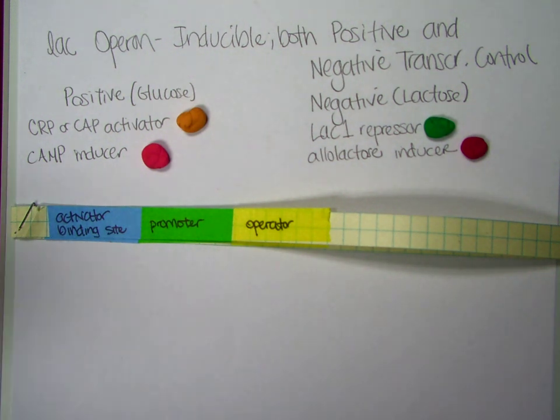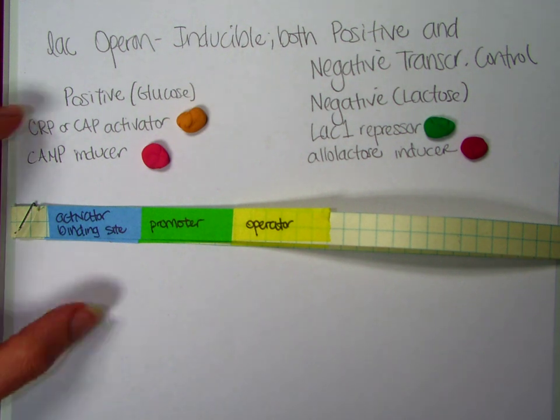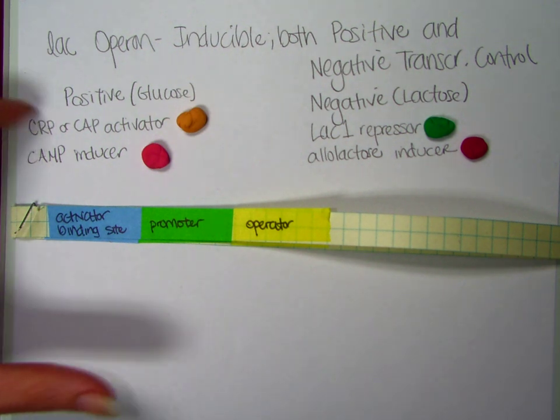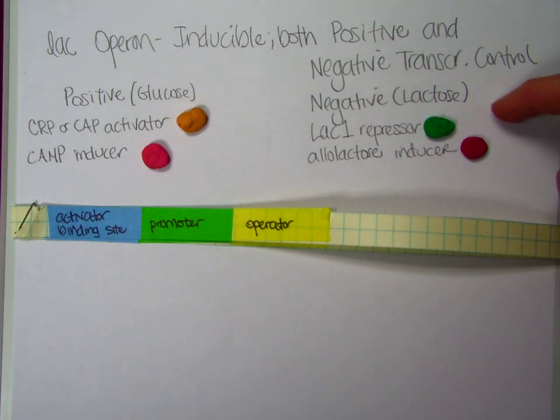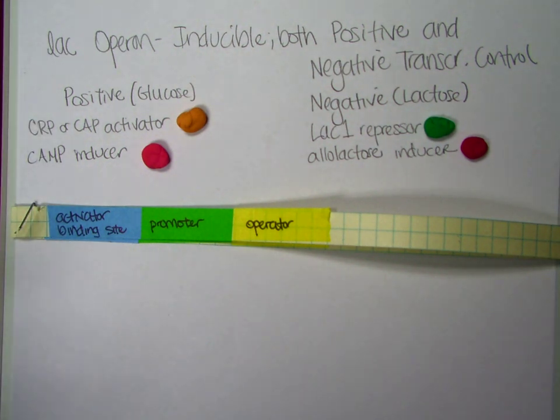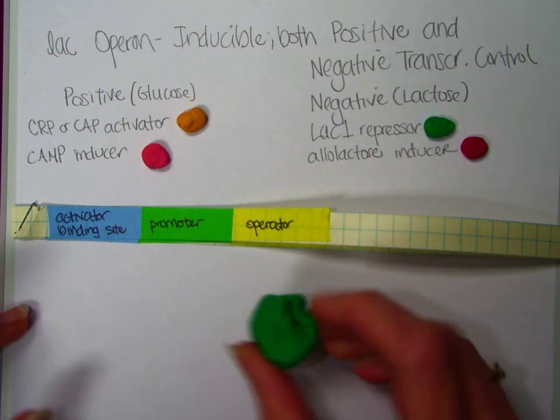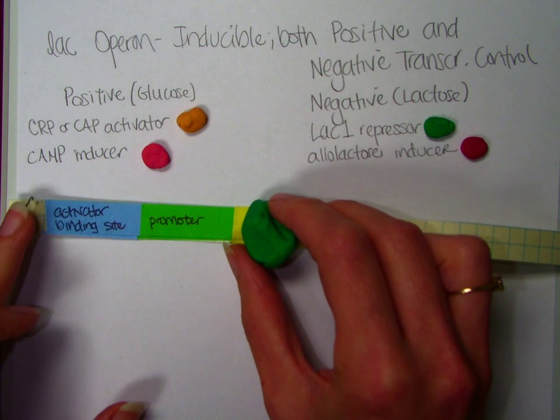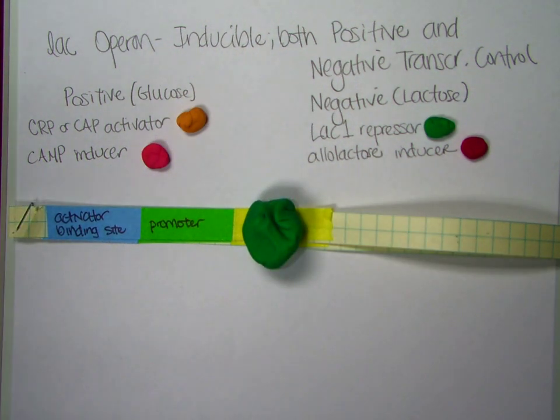So you'll remember that we're not going to want to transcribe this if we have glucose present or if we don't have lactose. So these are going to be our two control parameters. And so since we know this is an inducible gene, we know that we're going to start off with the repressor protein just sitting on the operator because the default for inducible genes or inducible operons, they work the same way, is no transcription.